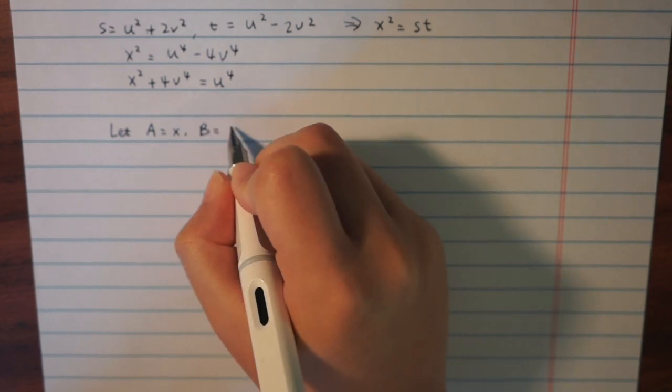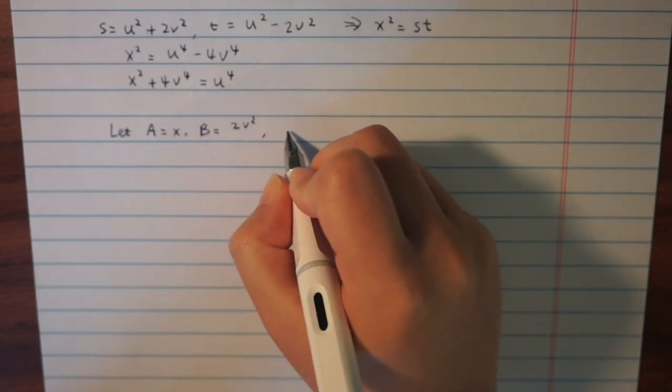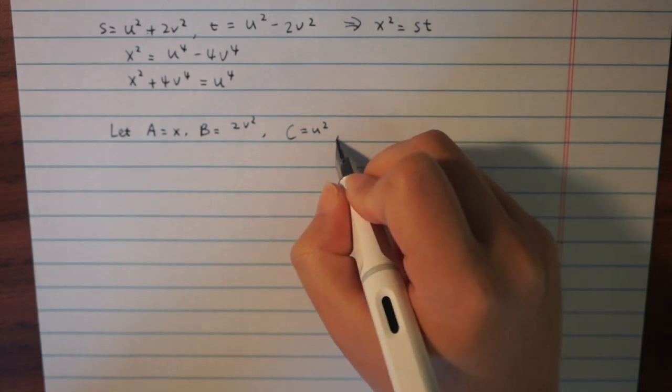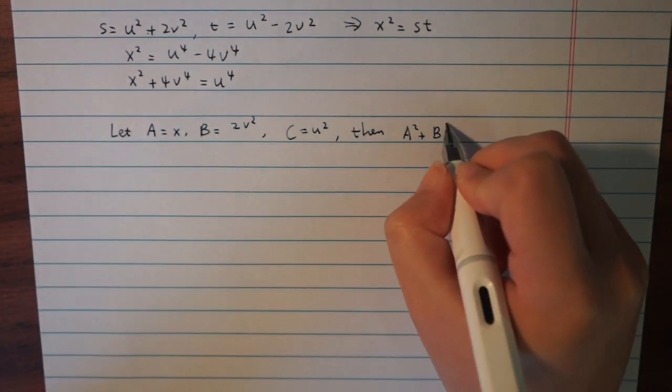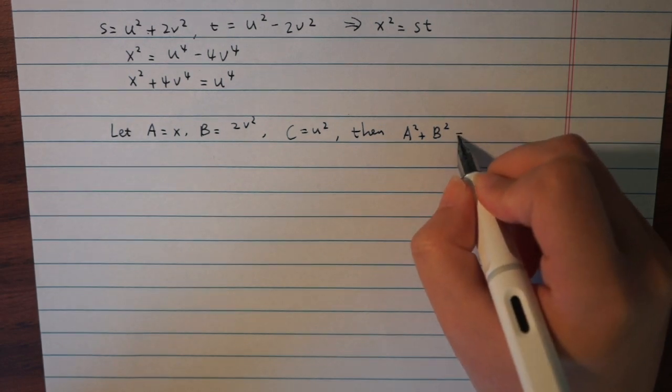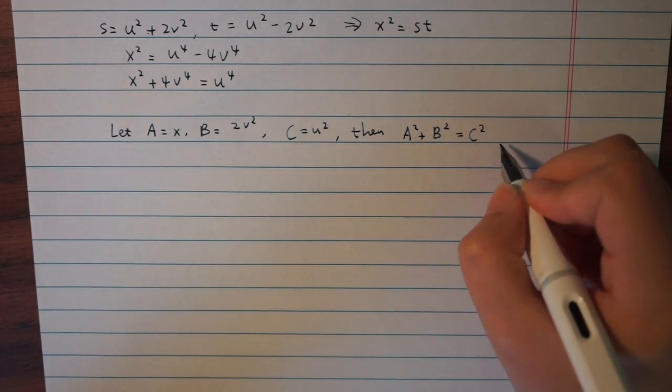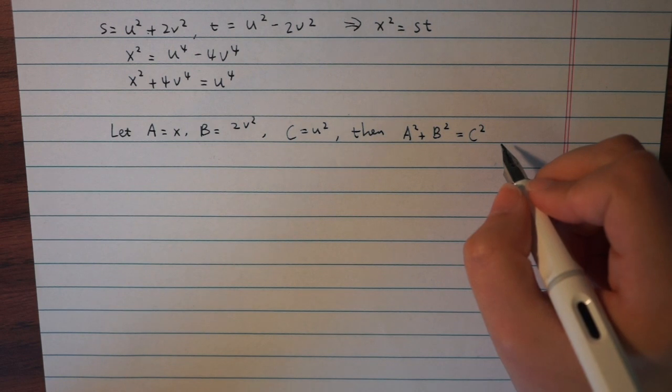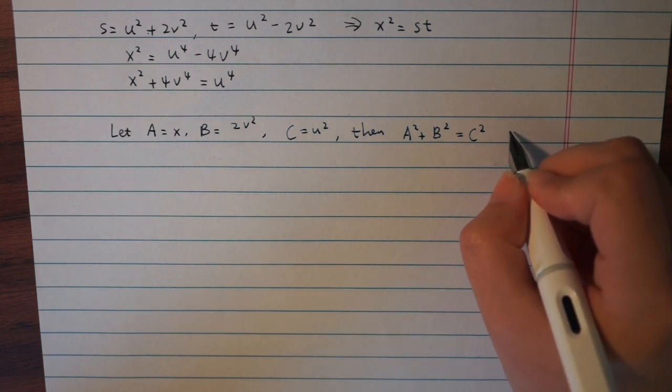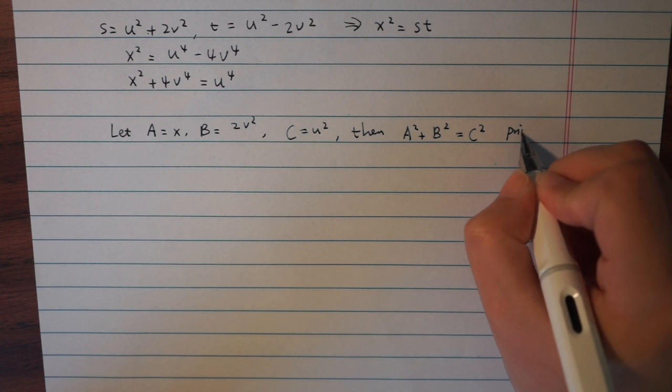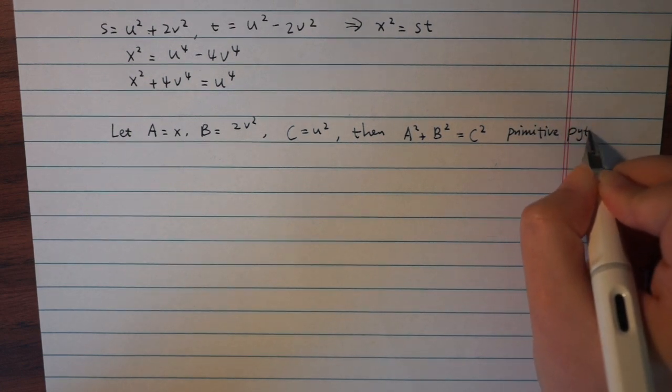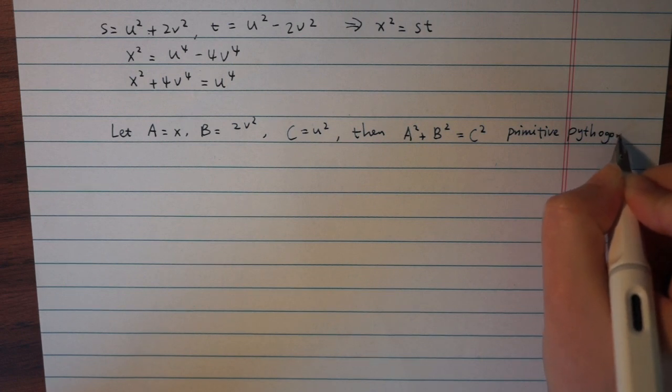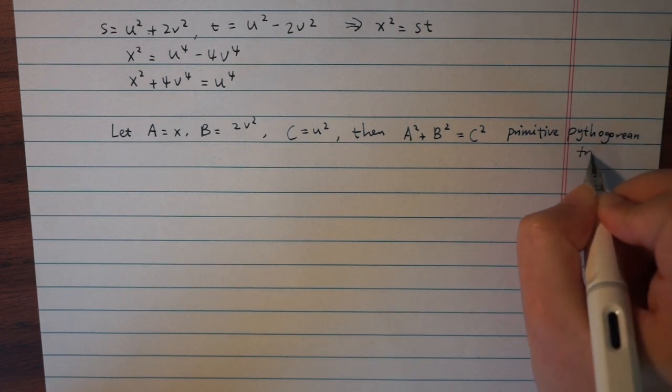If we let capitalized A equals x, capitalized B equals 2v squared, and capitalized C equals u squared, then capitalized A squared plus capitalized B squared equals capitalized C squared. So capitalized A, B, C is a primitive Pythagorean triple.